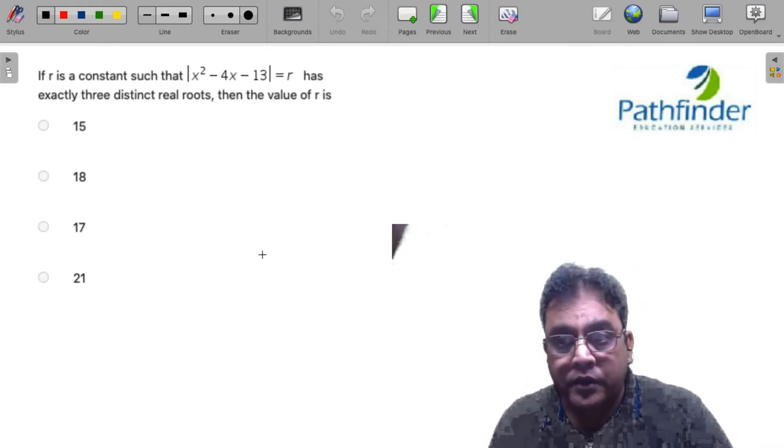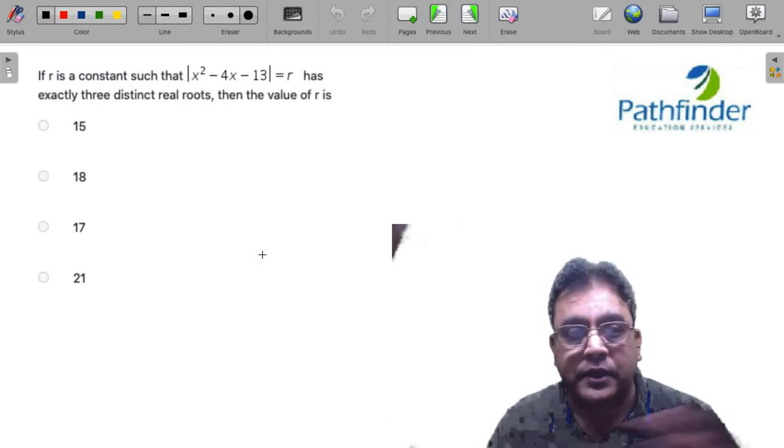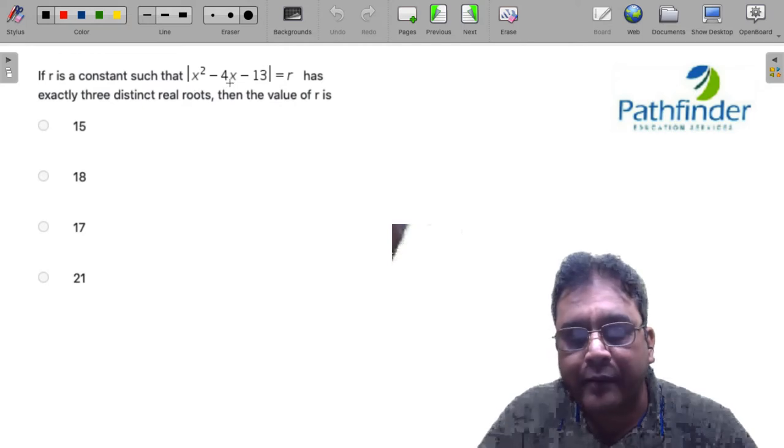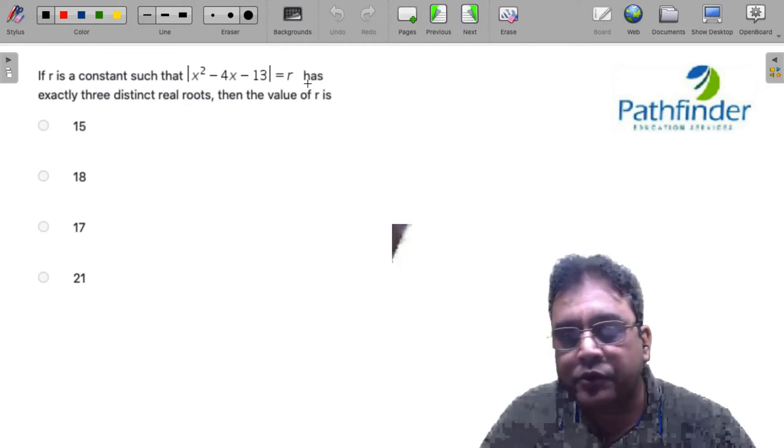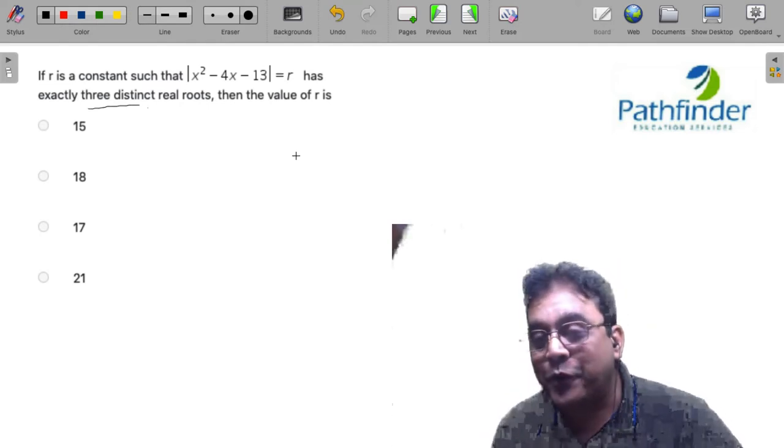Here is 2021 quantitative aptitude slot 1 question number 7. If r is a constant such that |x² - 4x - 13| = r has exactly three distinct real roots, then what is the value of r?